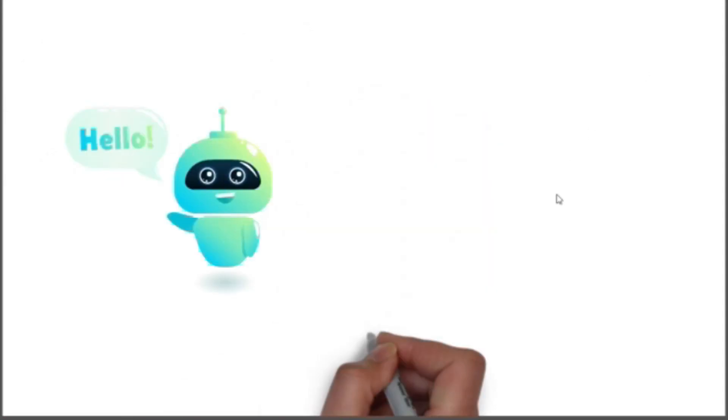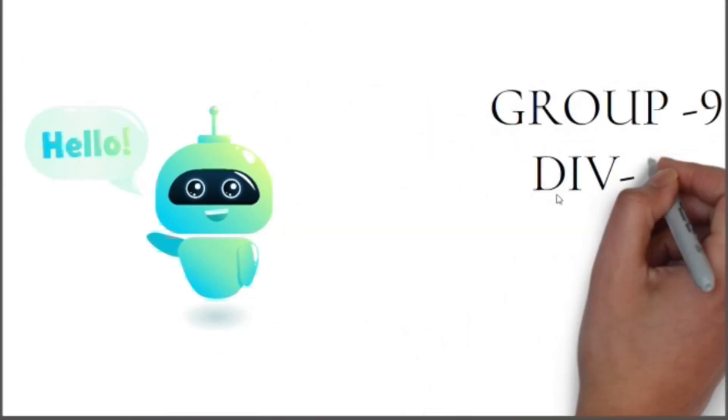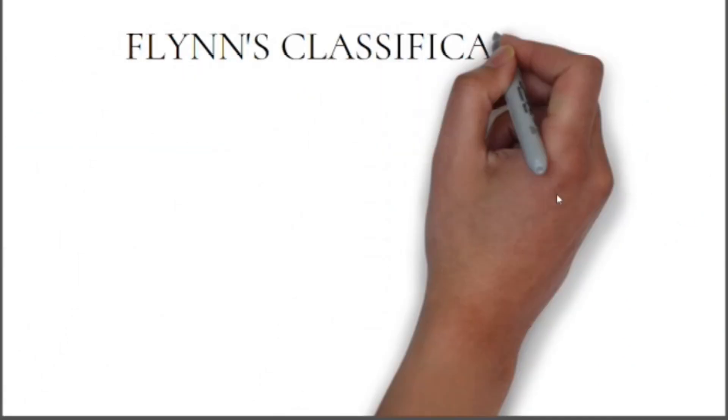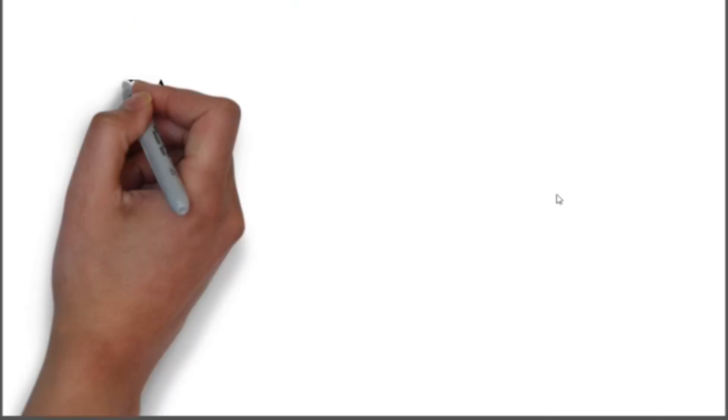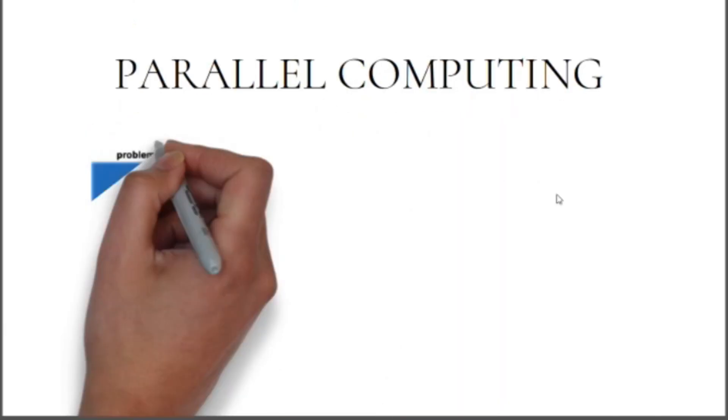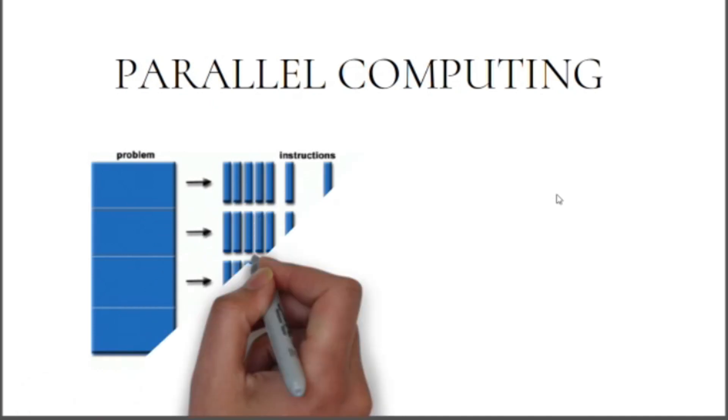Hello everyone, we are Group 9, Division K VIP. Today we'll be explaining the concept of Flynn's classification. Before going to Flynn's classification, let us get to know what is the concept of parallel computing. Parallel computing simply means using multiple processors to solve a problem.